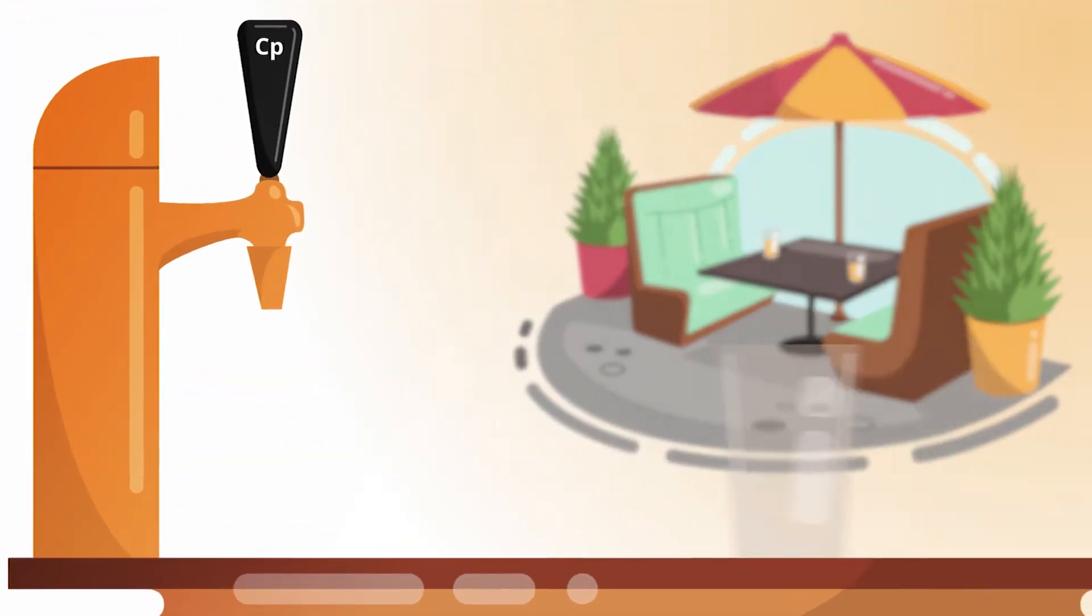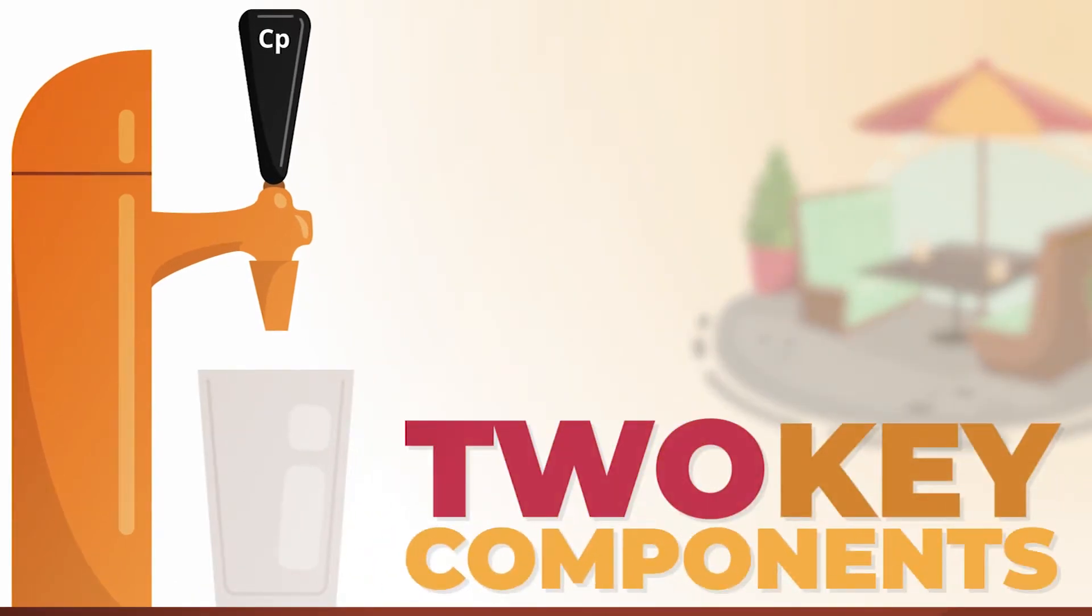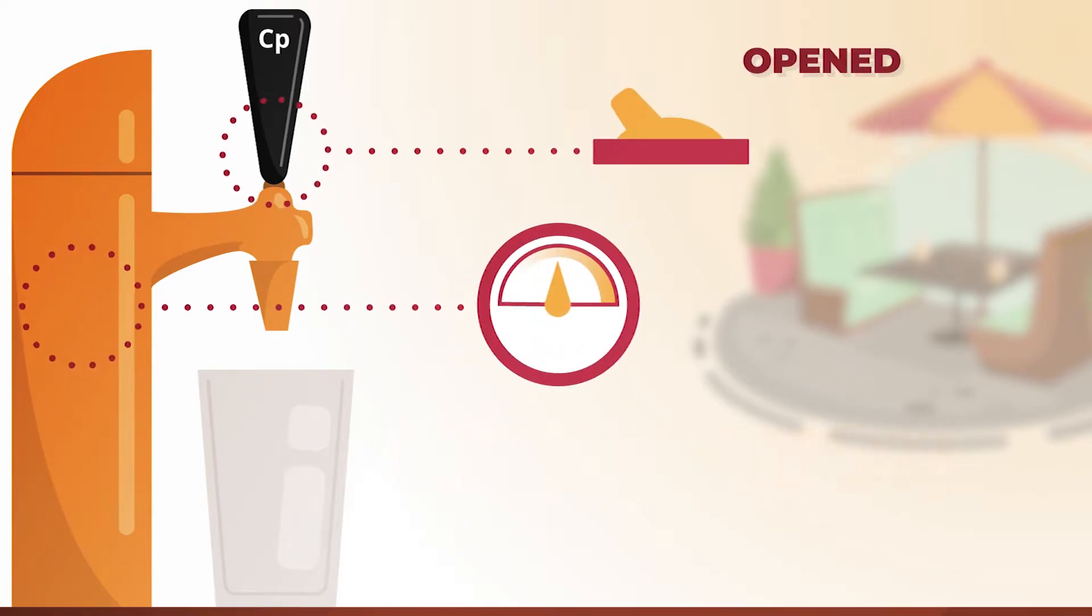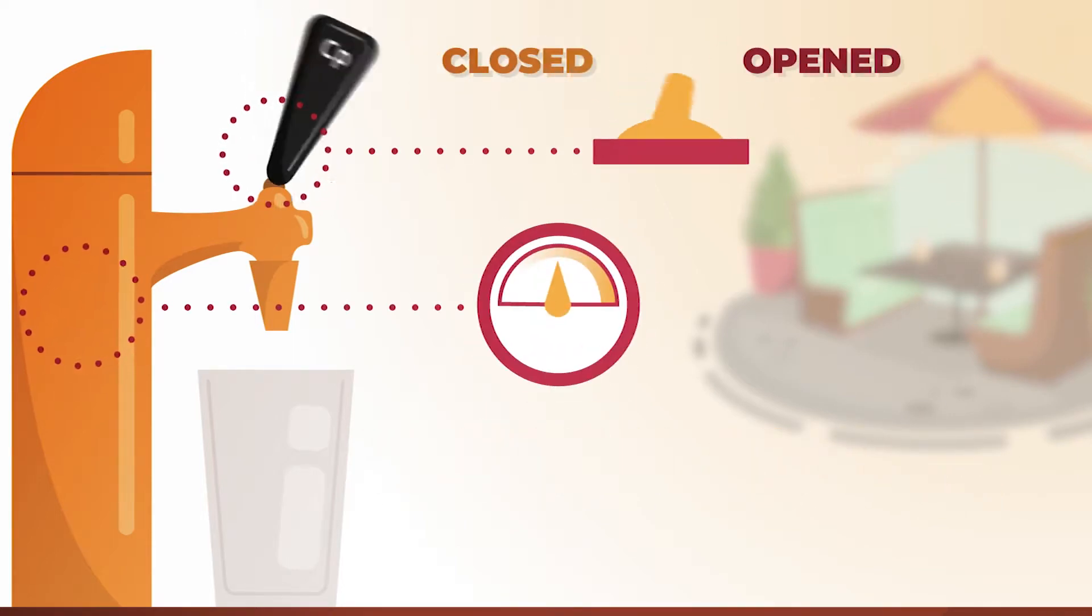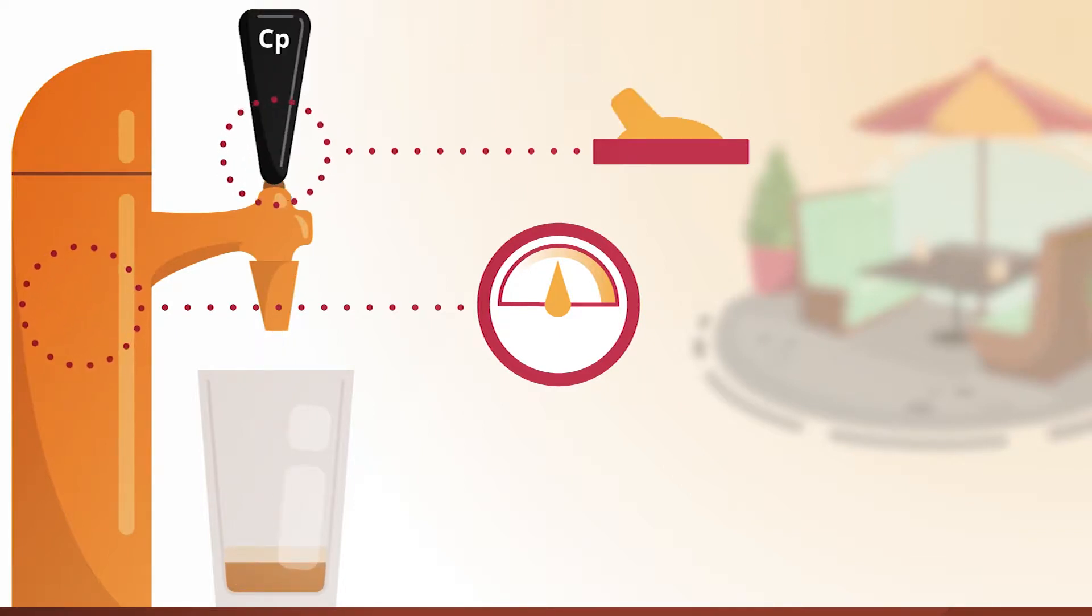Let's say the goal is to pour one perfect pint of beer. First, there are two key components to any beer tap. The tap and the regulator. Tap can only be opened or closed. If the tap is open, beer comes out. If it's closed, no beer flows into your empty, chilled glass.